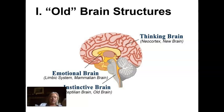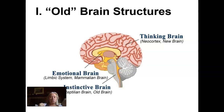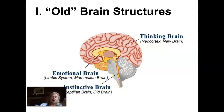This is our puppy brain. If any of you have a puppy or a dog, you know that they are very emotional and very responsive to the emotions around them. And then all of this really advanced part in humans is our thinking brain — some people call it the neocortex or new cortex. Evolutionarily speaking, we would say this region was first to develop, followed by the limbic system, followed by the cortex.